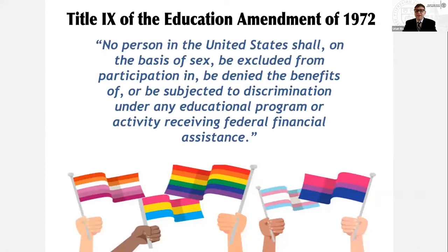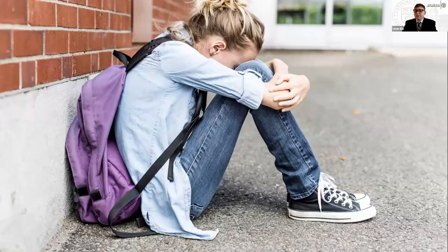Uriah references Title IX of the Education Amendments of 1972, which has been instrumental in curbing discrimination in the education system. However, Title IX currently does not extend protections to sexual orientation and gender identity, which is part of an overarching wicked problem. The wicked problem centers on discrimination and inequality in education as it pertains to sexual orientation, gender identity, and the resulting mental health consequences.